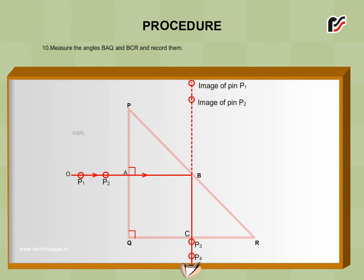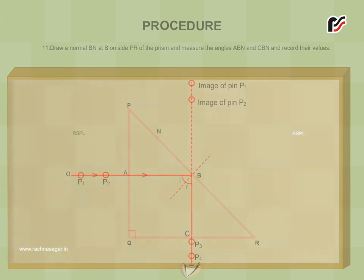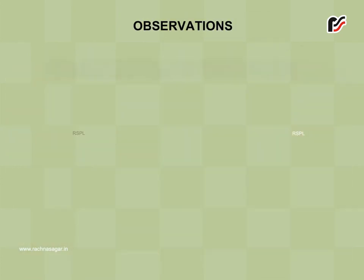Measure the angles BAQ and BCR and record them. Draw a normal BN at B on side PR of the prism and measure the angles ABN and CBN and record their values. Record your observations as follows.